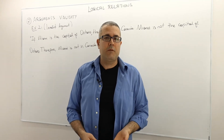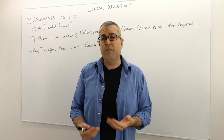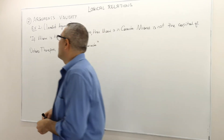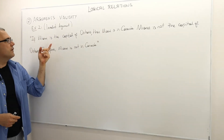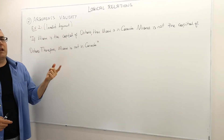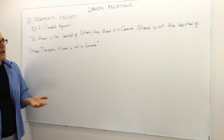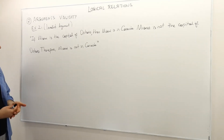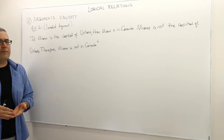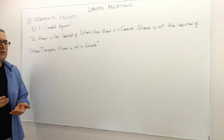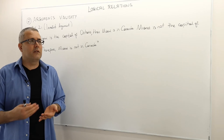In the second example, we are going to look at an invalid argument. Here is the invalid argument: If Miami is the capital of Ontario, then Miami is in Canada. Miami is not the capital of Ontario, therefore Miami is not in Canada. So how can we check if this argument is valid or invalid?